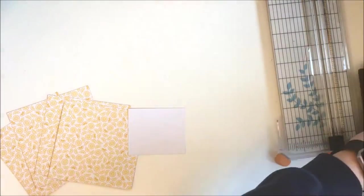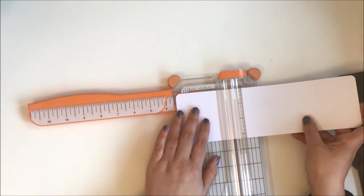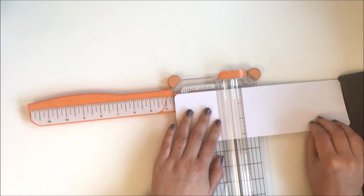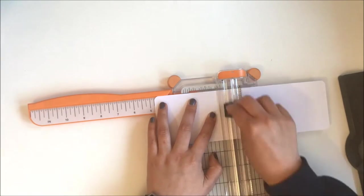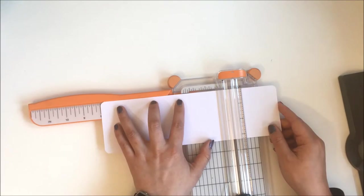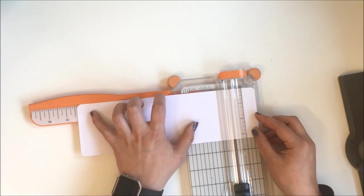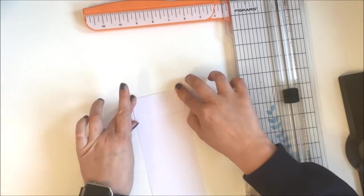This long piece will form the box shape that the teabag envelopes will sit in. I'm scoring it at 3.5, 4.75, 8.25, and 9.5 inches, but again I'll leave all that down below so don't panic about trying to write everything down. Then I'm just folding along those score lines.